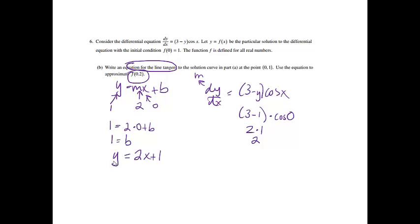And then it says to use that equation to approximate f of 0.2. So basically all we need to do is plug in 0.2 for my x. So we're going to have 2 times 0.2 plus 1. 2 times 0.2 is 0.4 plus 1 is 1.4. So my approximation for 0.2 is 1.4.